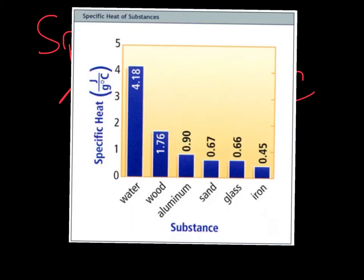Take a look at this chart showing water, wood, aluminum, sand, glass, and iron and their specific heat values — how much energy it takes to raise the temperature of one gram of that substance by one degree Celsius. Iron has one of the lowest amounts of energy needed, and water has one of the highest. Because water has the highest specific heat value, it has to absorb a large amount of energy to change its temperature, and must also lose a large amount of energy to decrease in temperature.